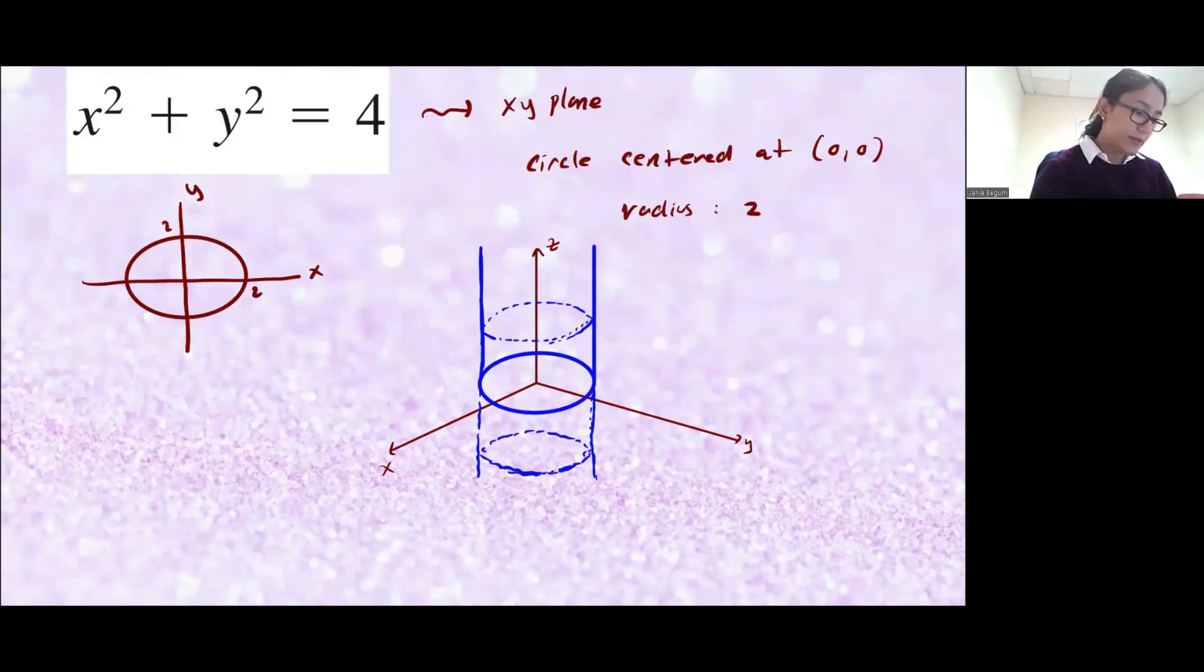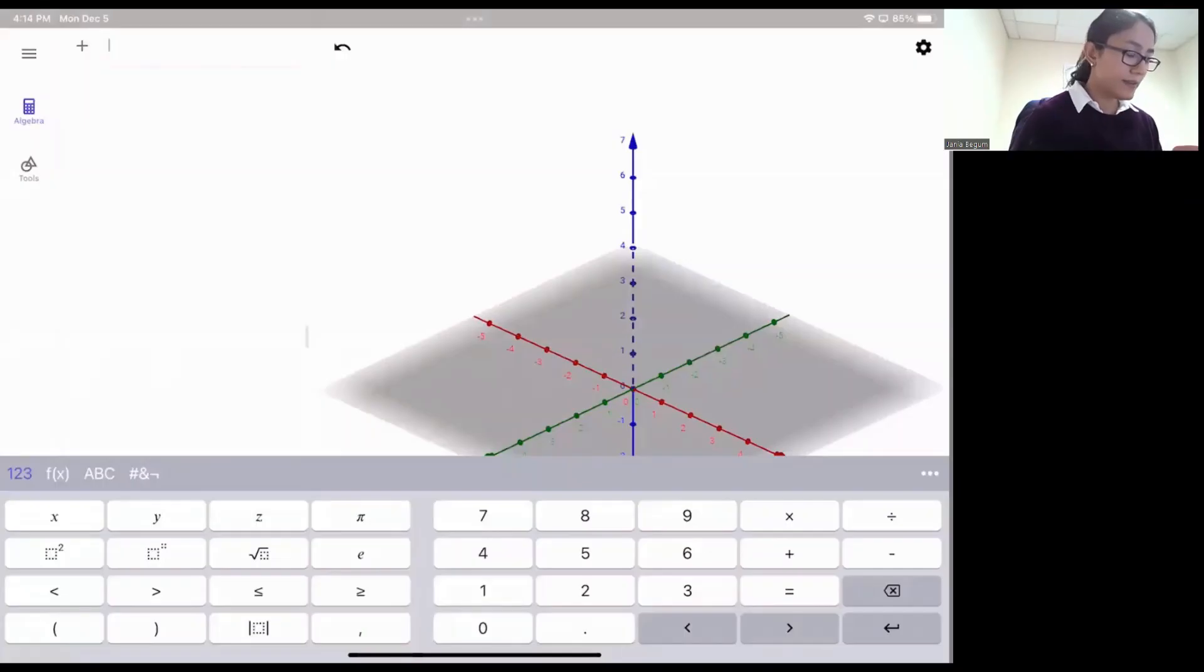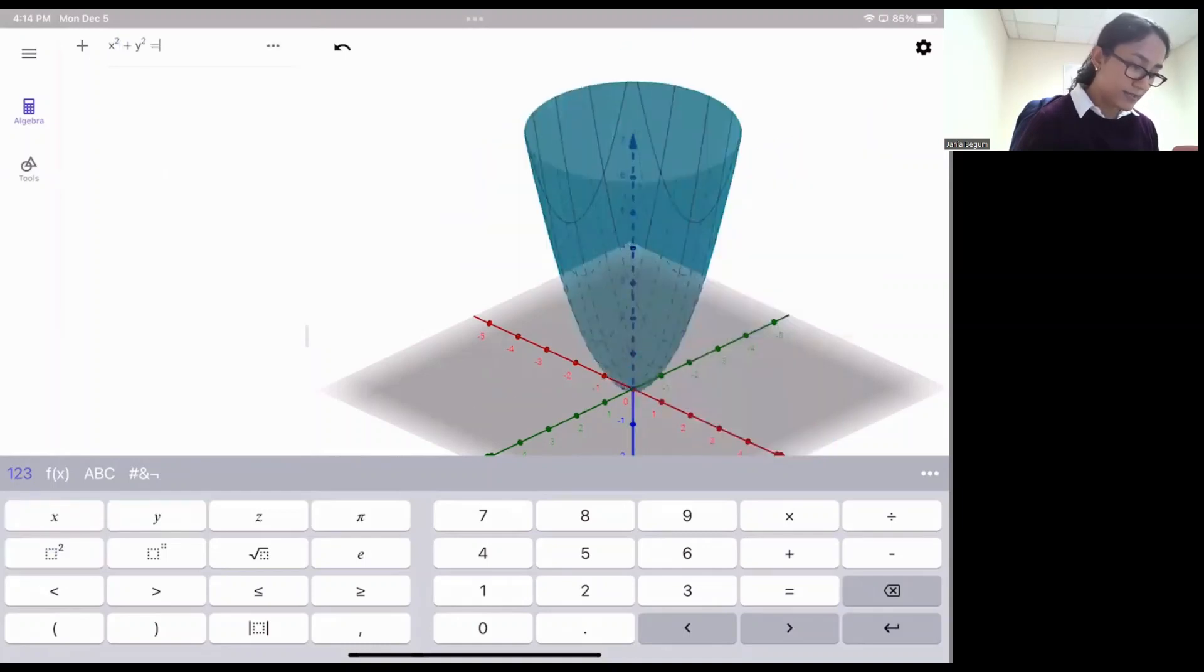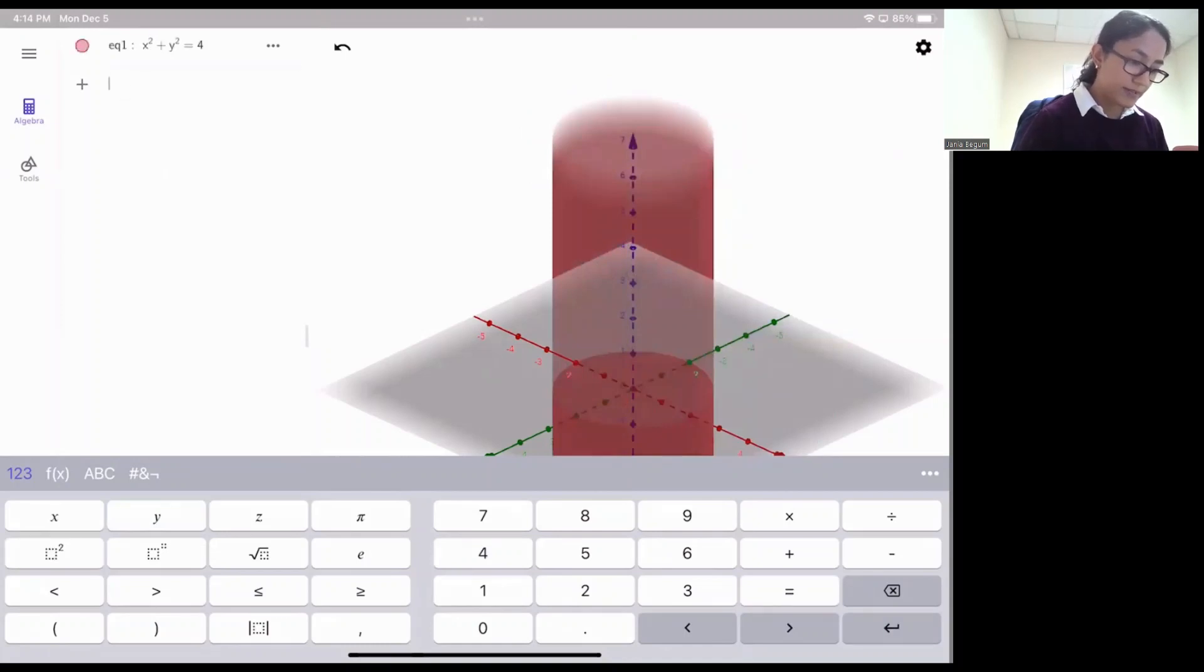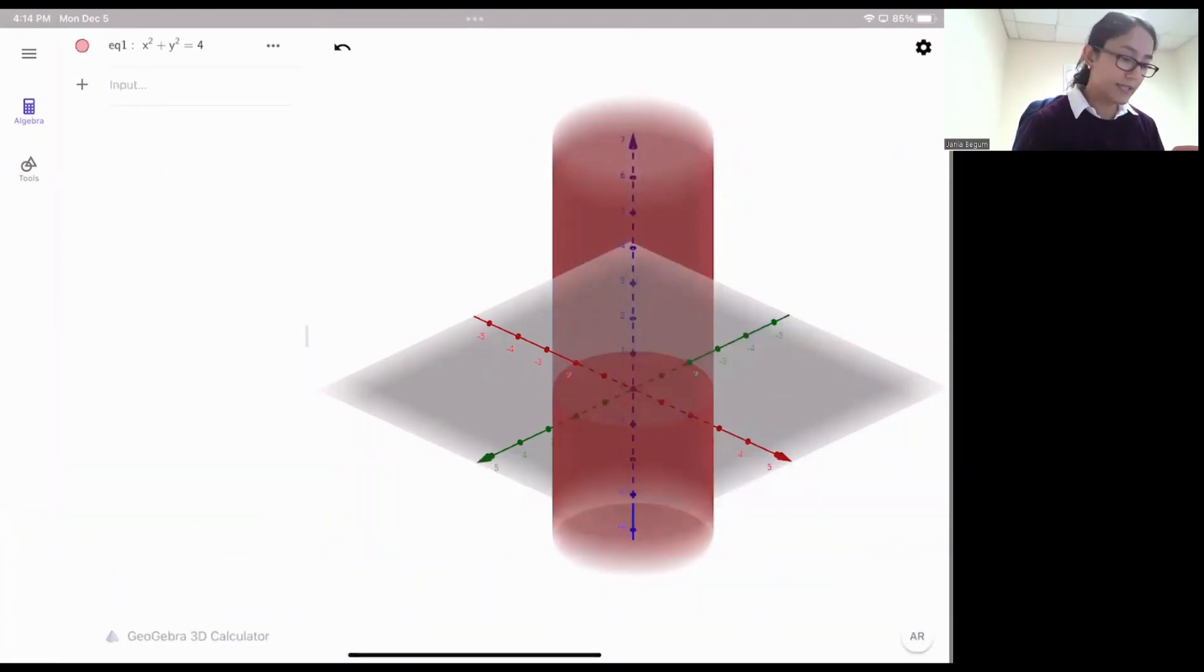Let me show you this same picture in a three-dimensional calculator so you'll have a better view of how this looks like. Here's my 3D calculator and I'm going to type in the equation that we just had. We had x squared plus y squared is equal to 4. So this is the picture that I tried to draw by hand. You see that the cylinder is open along the z-axis.